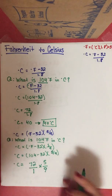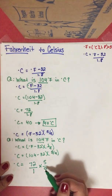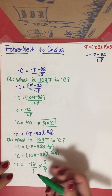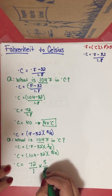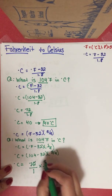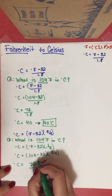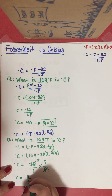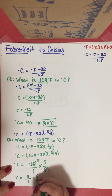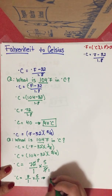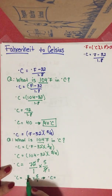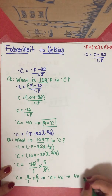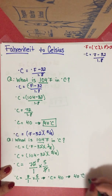72 is divisible by 9: 9 divided by 9 is 1, and 72 divided by 9 is 8. That leaves us with degrees Celsius equals 8 over 1 times 5 over 1. 8 times 5 is 40, so our final answer is 40 degrees Celsius.